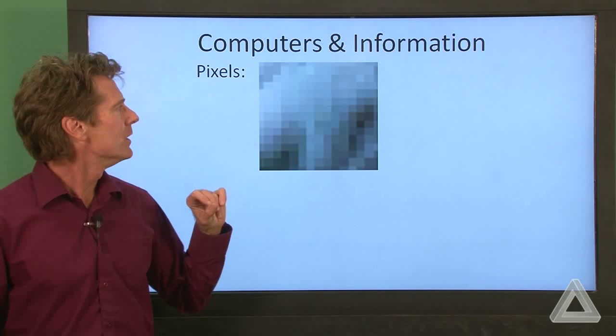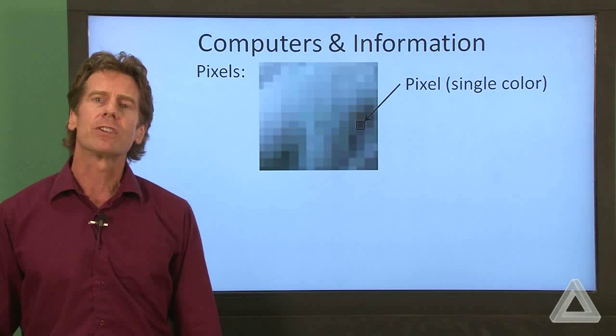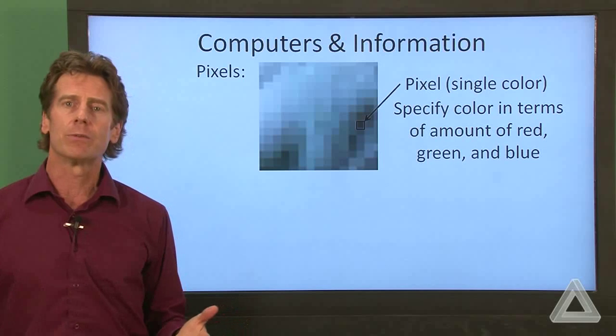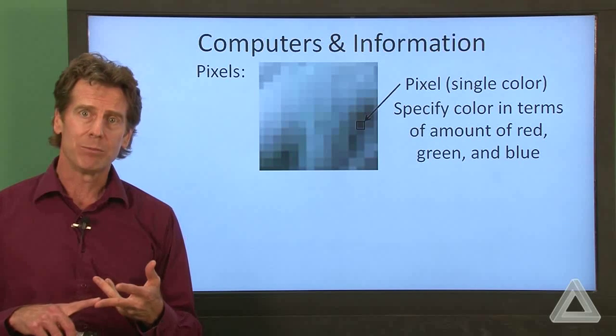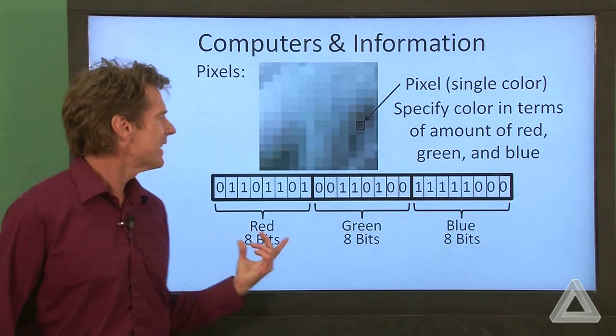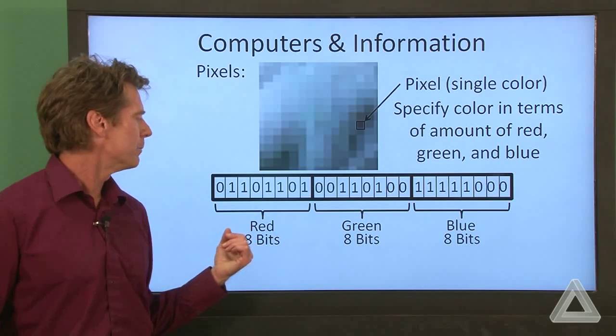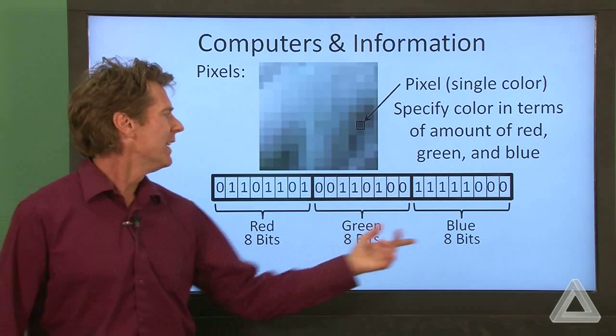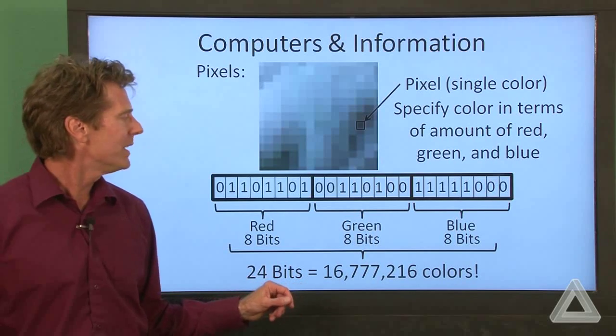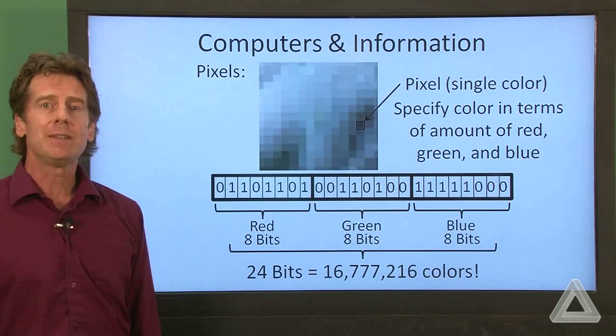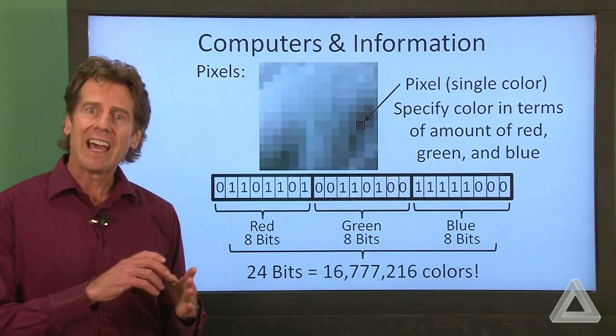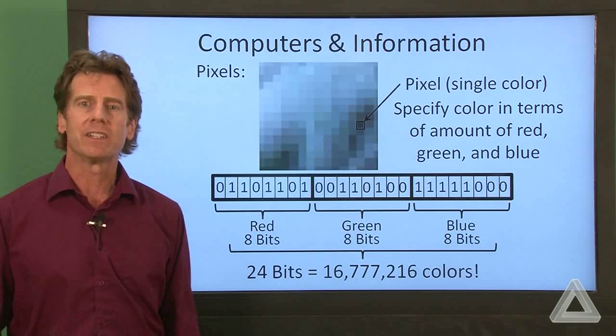So here's that expanded view of the picture. We'll pick out one picture element and this has a single color. Let's specify that color in terms of the amount of red, green, and blue. And we'll dedicate a certain number of bits to each one of those colors. So let's say, for instance, we use eight bits to specify the amount of red, eight bits for the amount of green, and eight bits for the amount of blue in a pixel. So this is a total of 24 bits. But that gives us over 16 million different colors in our palette. And then we could just assemble the picture as a composition of all these picture elements.